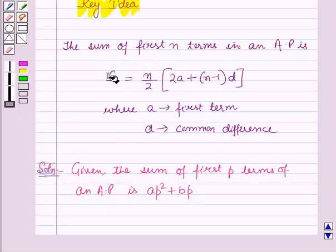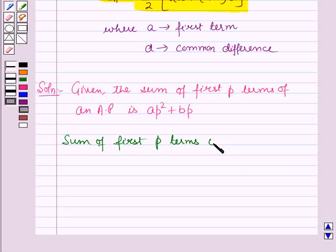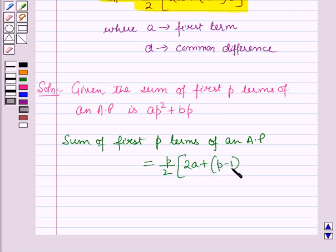Now using this formula which is given in the key idea, sum of first p terms of an AP is equal to p by 2 into 2a plus p minus 1 the whole into d.